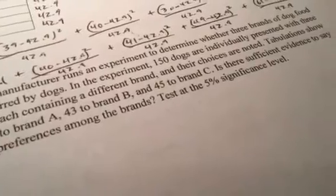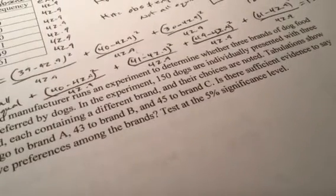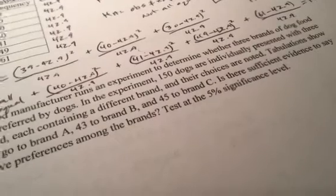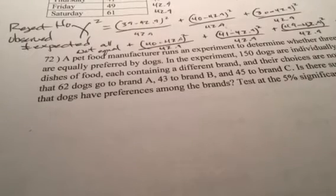Remember, we did 72. 72 has three categories. You do 155 by 3 because we're looking at, do the dogs prefer them equally? And so degrees of freedom 2. Alpha is 0.05. You can go from there. Folks, we're going to make it just under 15 minutes. This is Yak Math Videos signing out.